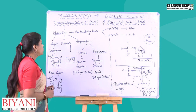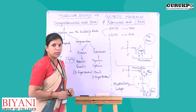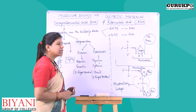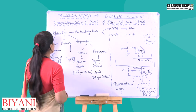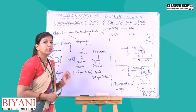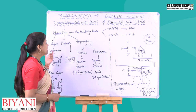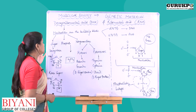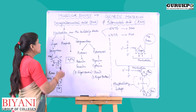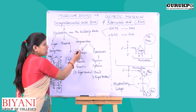Now we move on to the basic differences and the building blocks of DNA and RNA, that is the genetic material. The nucleotides are the building blocks of DNA or RNA. A nucleotide consists of three parts: the sugar content, the phosphate content, and the nitrogenous base.